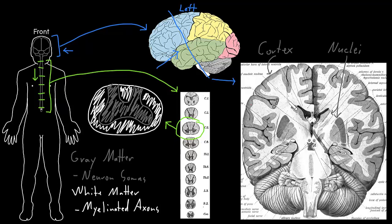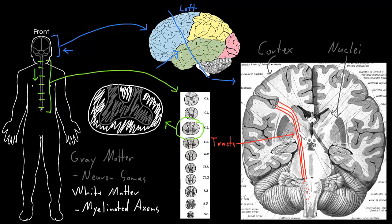In the white matter of the central nervous system are collections of axons traveling together to different areas. Multiple neuron axons are traveling together — starting in a similar area and heading to a similar area somewhere else in the central nervous system. Collections of axons traveling together in the central nervous system we call tracts. A tract can have many, many axons in it, carrying often a very similar kind of information from one part of the central nervous system to another.